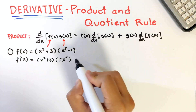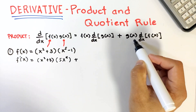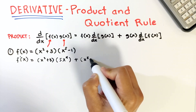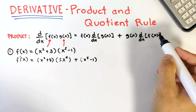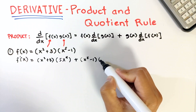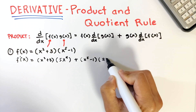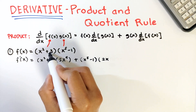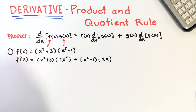Then plus, copy g which is x raised to 5 minus 1, and differentiate f. F is x squared plus 3; using the power rule again, the derivative is 2x for x squared, and the derivative of 3 is 0. So this is the whole derivative.